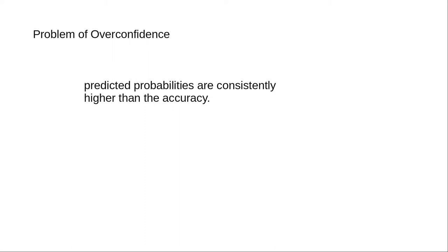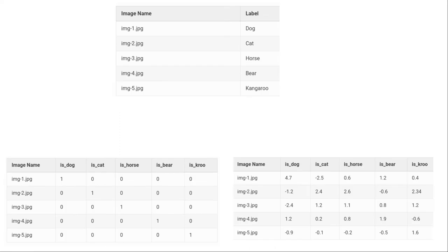Now let's consider the problem of overconfidence with an actual example. Here I have, for example, five images with labels, and then a human labels them with one-hot encoded vectors like: is dog, is cat, is horse, is bear, is kangaroo. One represents the true label and zero represents false.